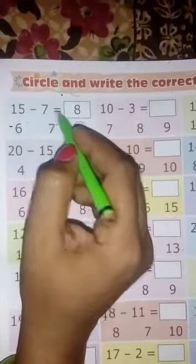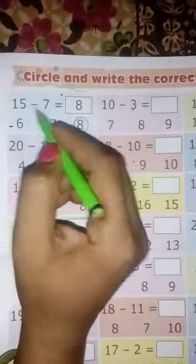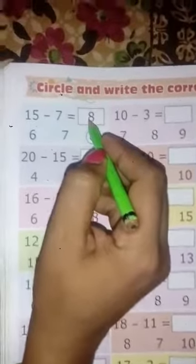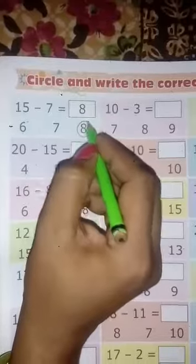15 minus 7 equal to 8. 15 mein se agar 7 chala jata hai, to kya ho jata hai? 8. 8 is the right answer, circle the 8.